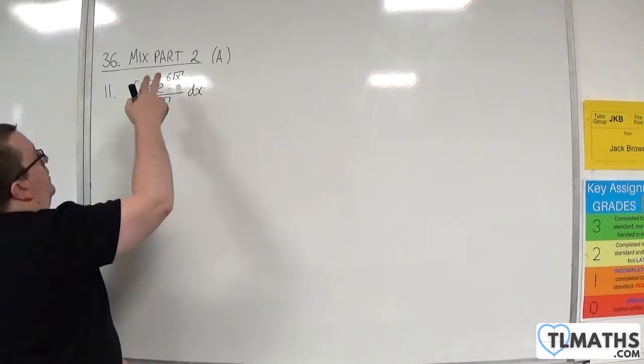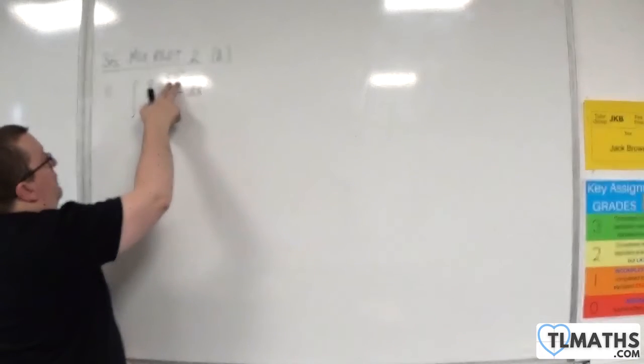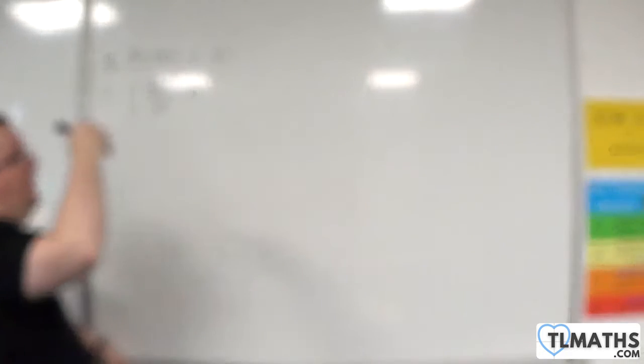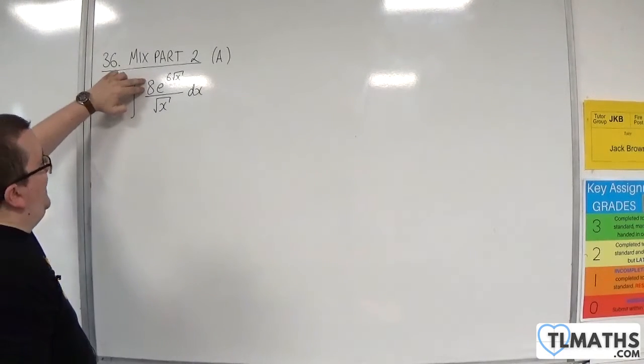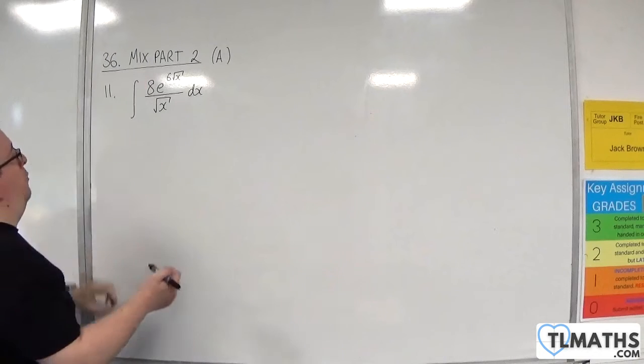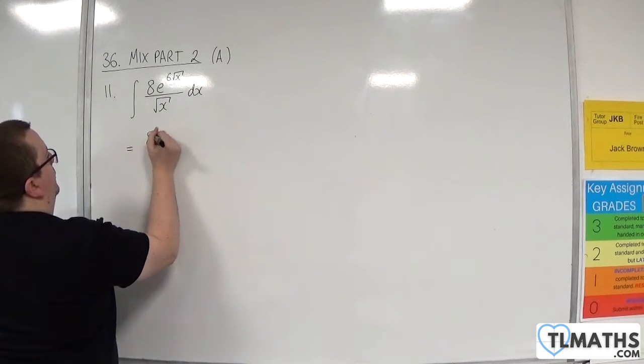Now, 6 root x differentiates to 3x to the minus a half. On the outside, we've got 8, so I've got 8 thirds of what I want. So 8 thirds.